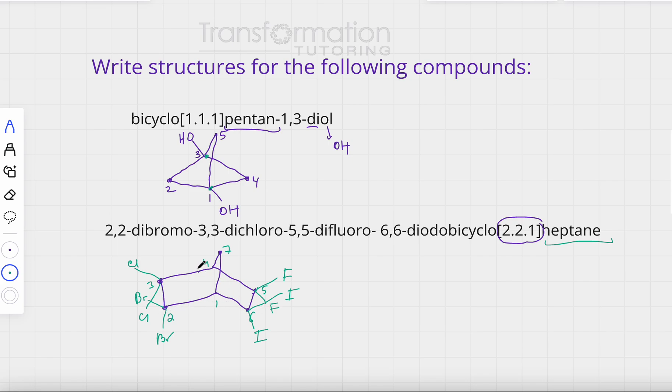Notice that it says heptane because I have seven carbons in my bicyclic system. This is my logic. Let me know if you have any questions or comments, and let me know if you like organic chemistry.